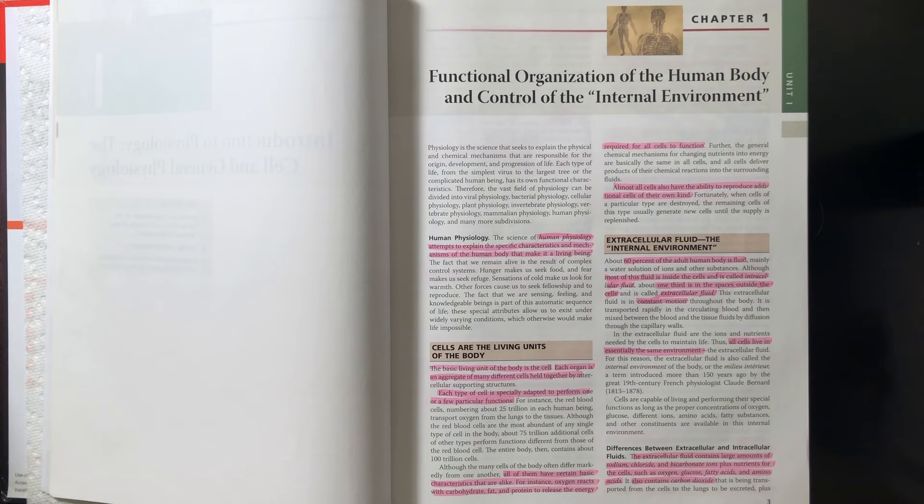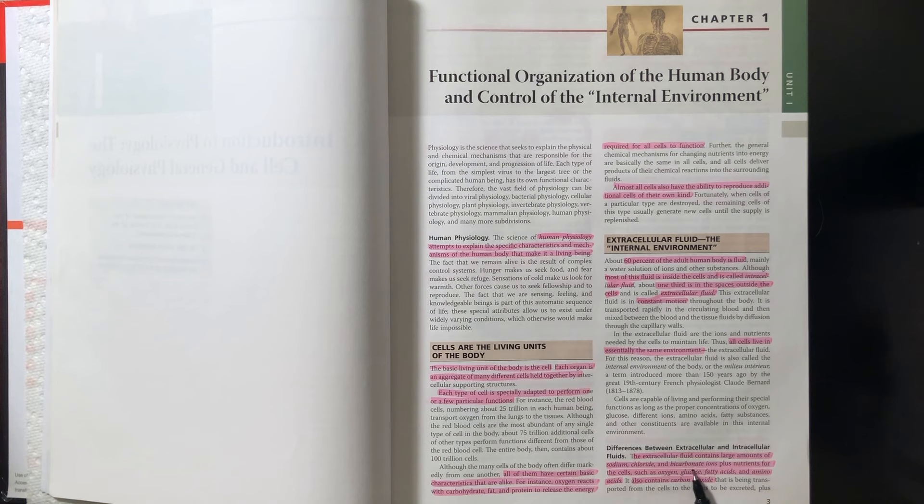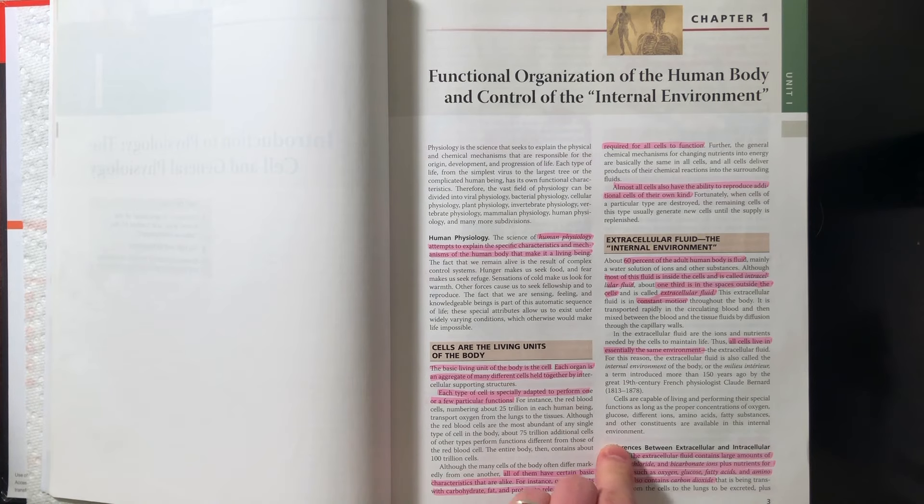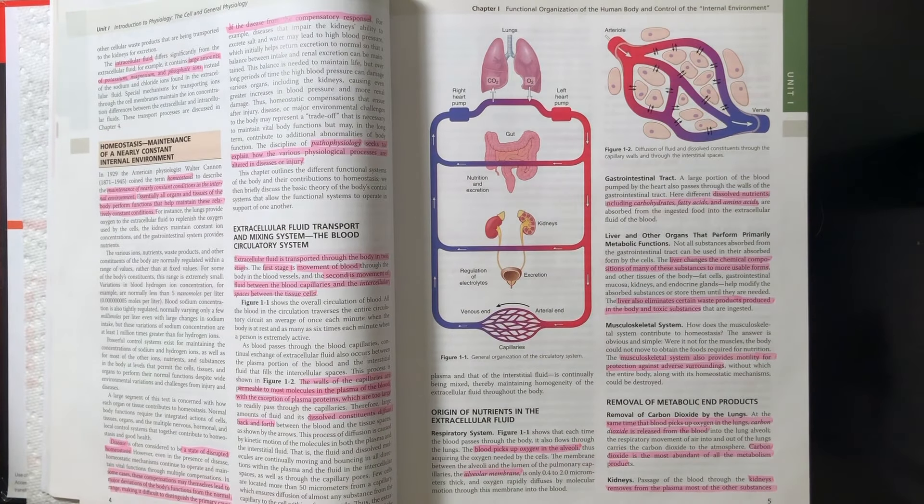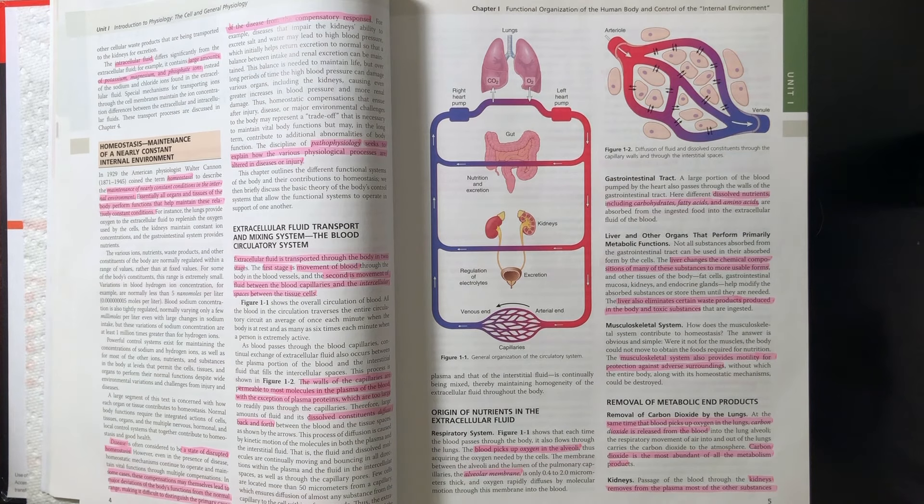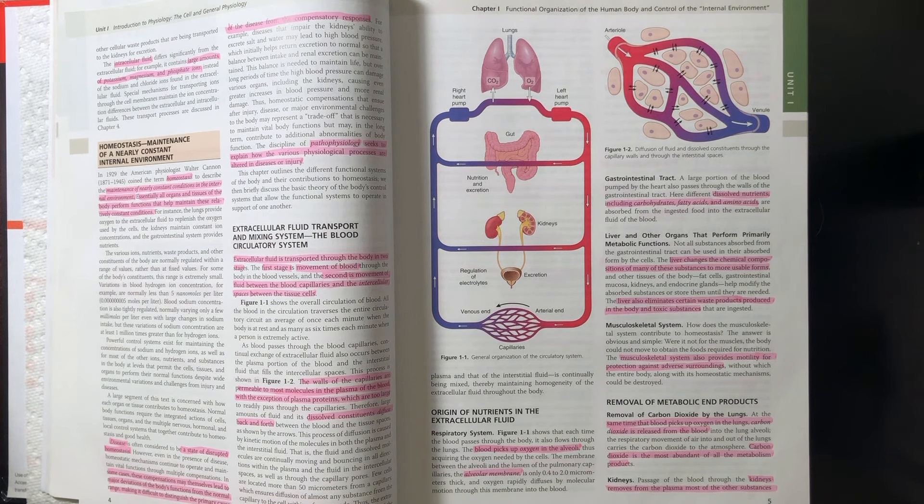To go through some of the differences between extracellular and intracellular fluid, we can start at the actual components within it. The extracellular fluid contains a large amount of sodium and chloride and bicarbonate ions, but also contains all the nutrients that the cell requires. So oxygen, glucose, fatty acids, amino acids, in addition to the waste products which are produced, such as carbon dioxide. Whereas the intracellular fluid contains a lot of potassium, magnesium, and phosphate.